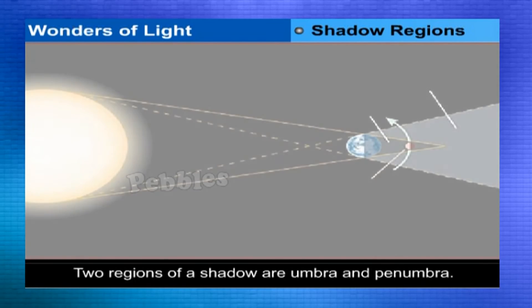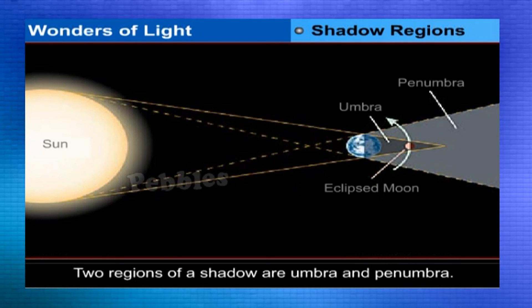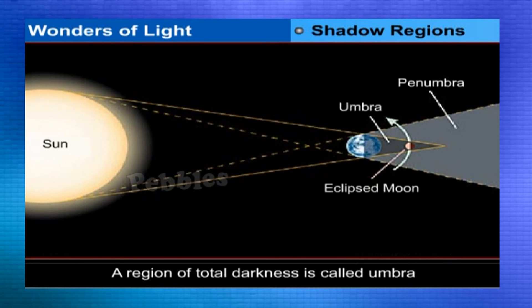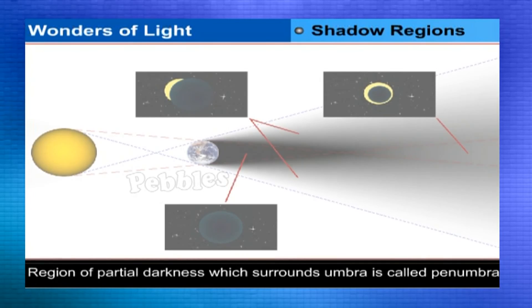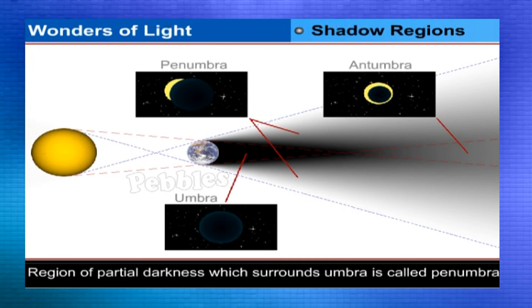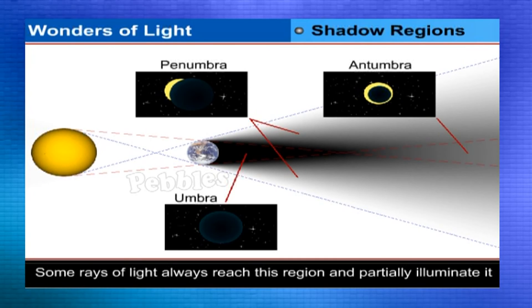Two regions of a shadow: Umbra — a region of total darkness where no ray of light enters. Penumbra — a region of partial darkness which surrounds the umbra. Some rays of light always reach this region and partially illuminate it.